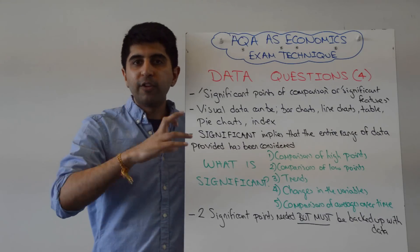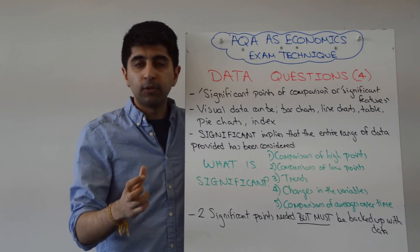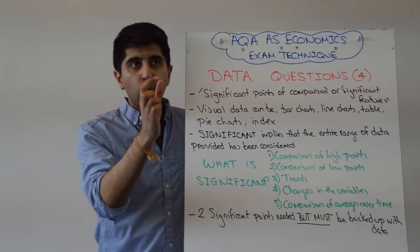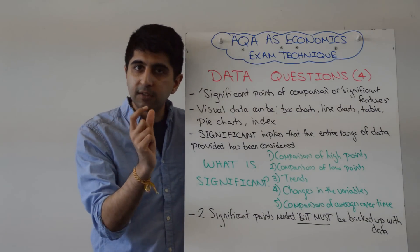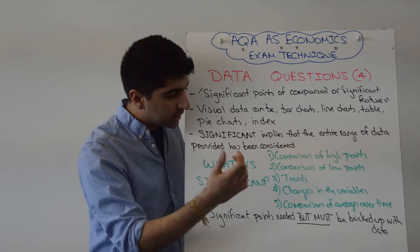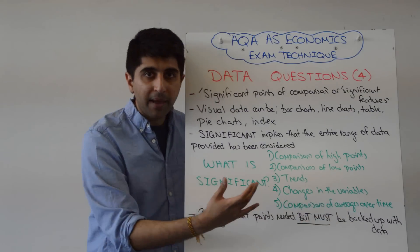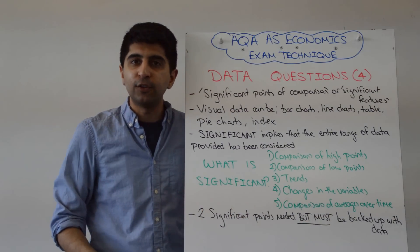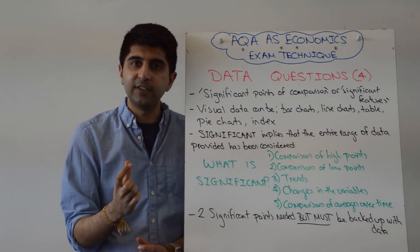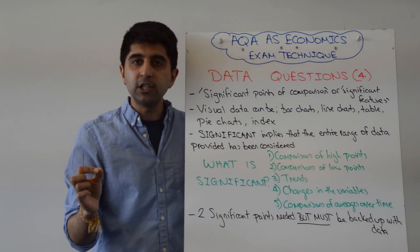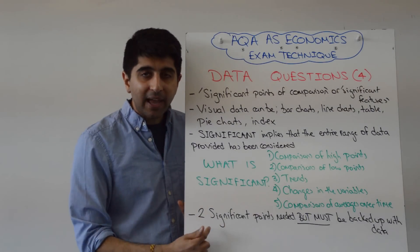Maybe it's looking at changes in variables. So maybe over a period of time, one variable was always positive, the other variable was always negative. Maybe at one key point, both variables went negative. It could be changes in variables. That's important to note. It could be comparisons of averages over time. If you're able to work out averages, that's a very powerful thing to do. That's for a significant point of comparison. If it's just a significant feature, then looking at an average for that variable is significant. Absolutely.